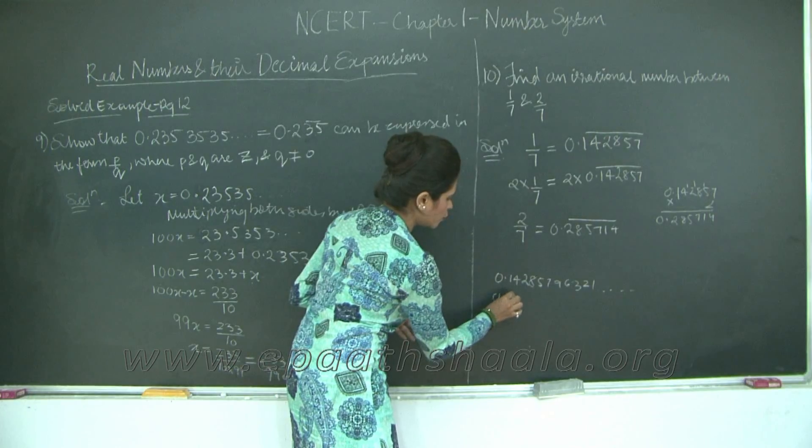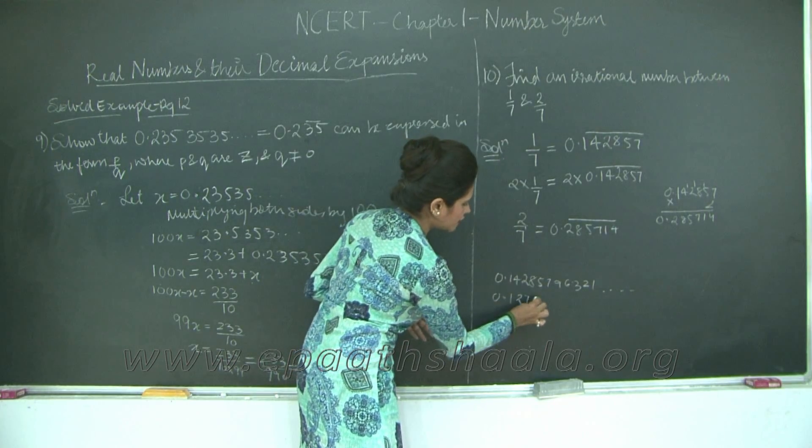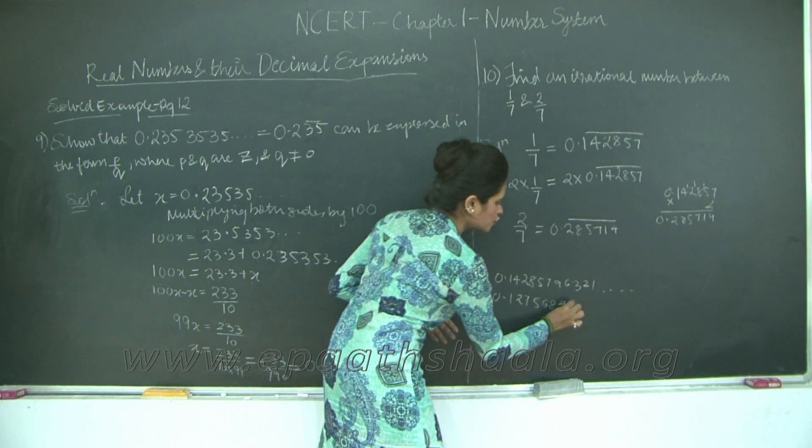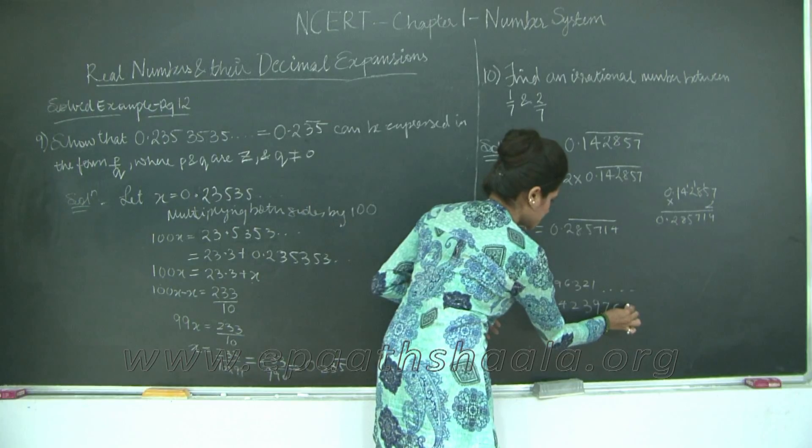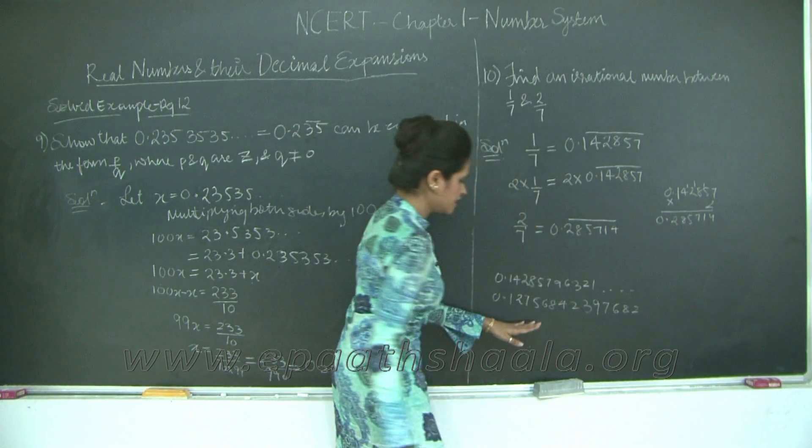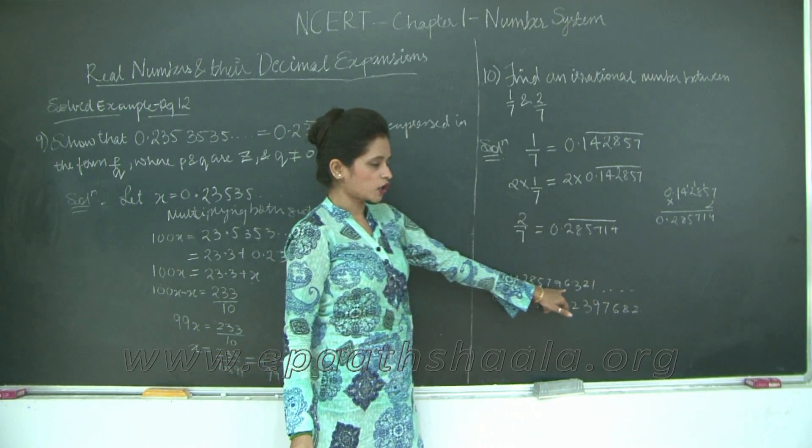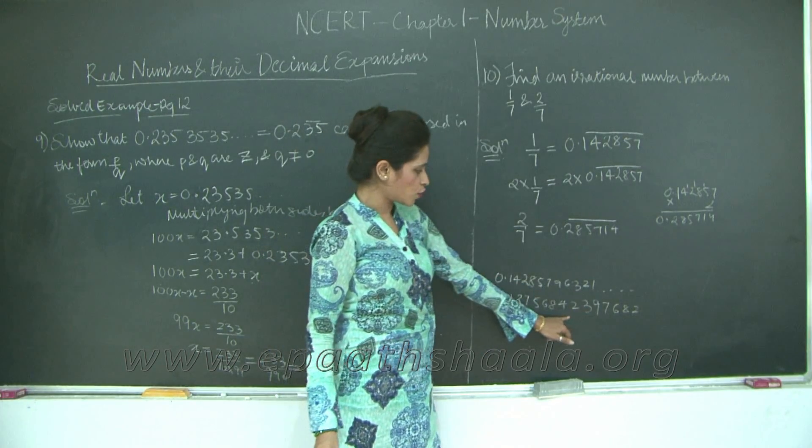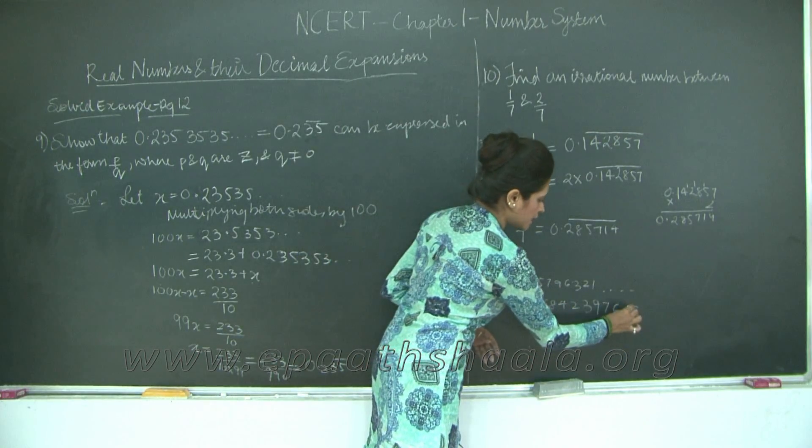Then I have 0.2756842397682. See, nothing is repeating after the decimal. There is no pattern whatsoever. Even here, there is no pattern whatsoever.